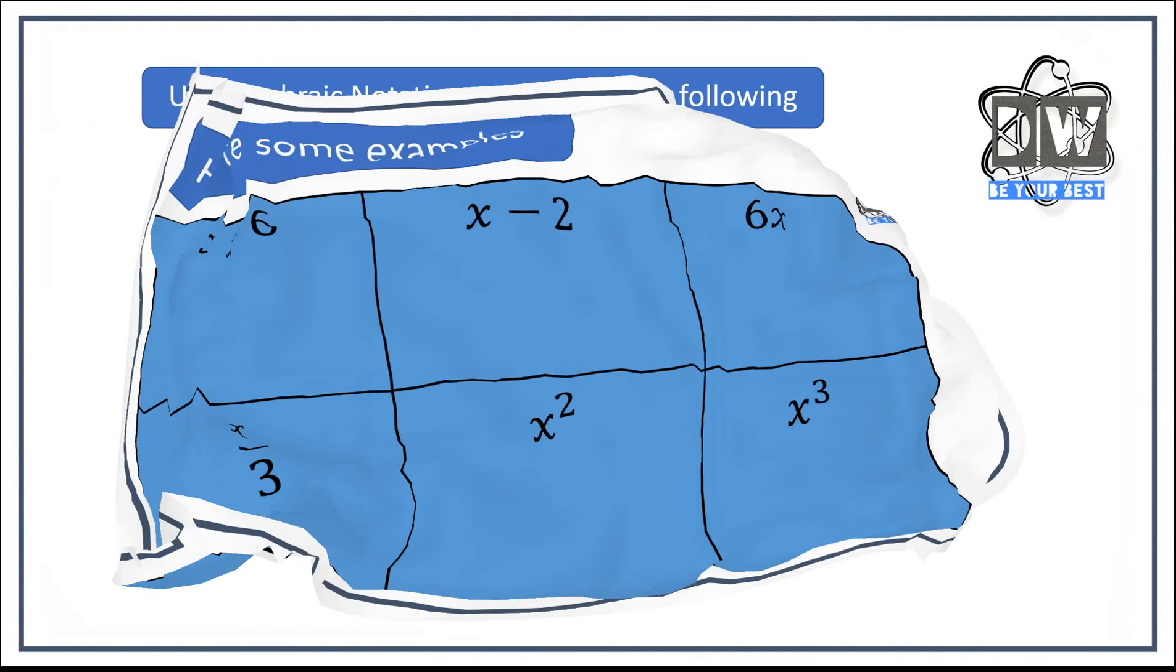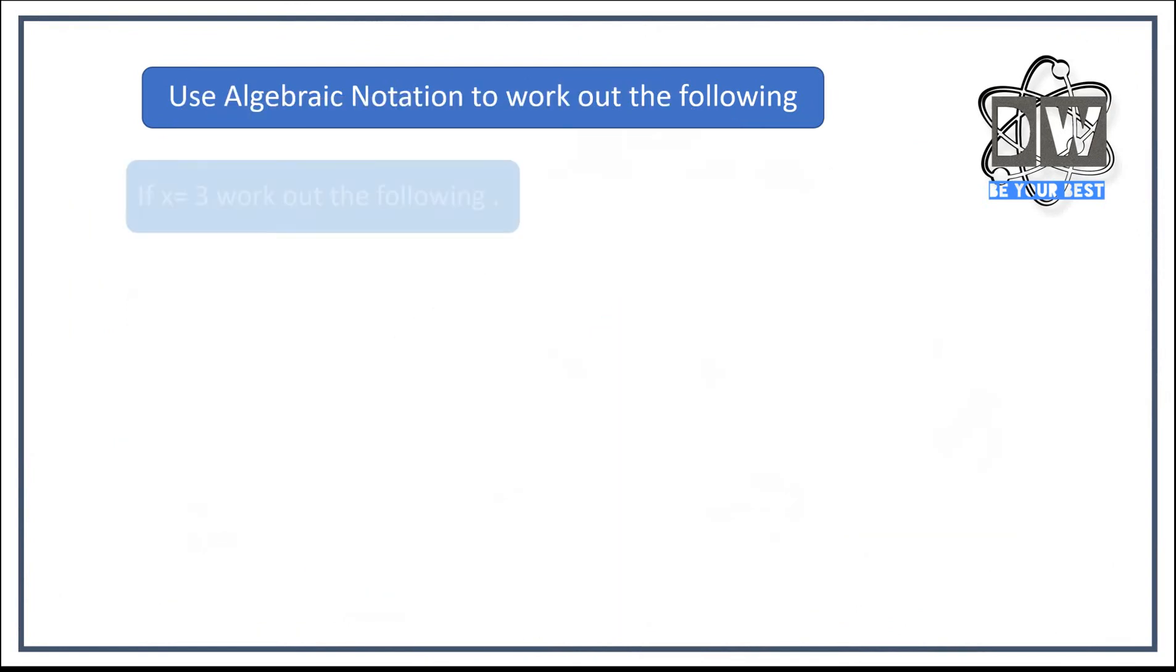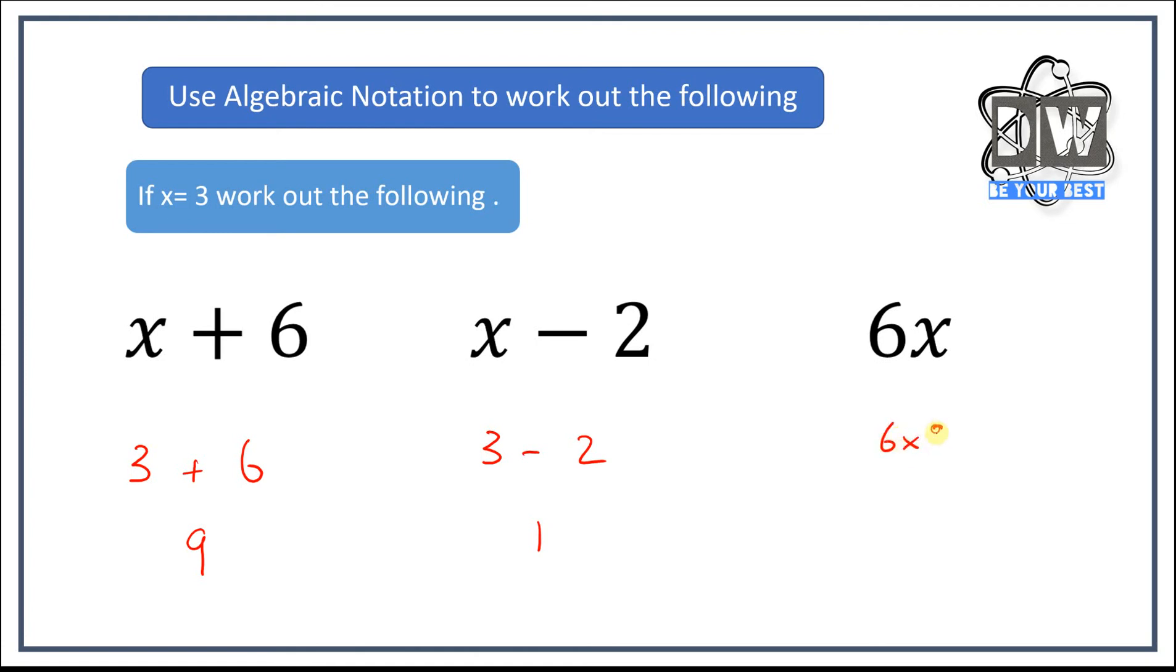I'm sorry if all my x's and times all look the same, but that's what it means. Very simple I'm sure. So now what we're going to do is say that for all of these questions on this slide, x equals three. What is our answer? So if x equals three, we would take away the x and put in three plus six equals nine. Three minus two equals one. So six times by x would be written as six times by three. Six times three is eighteen.